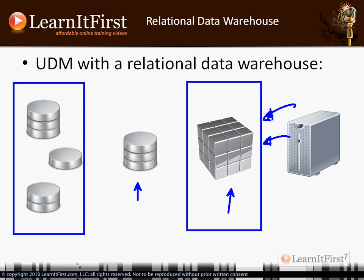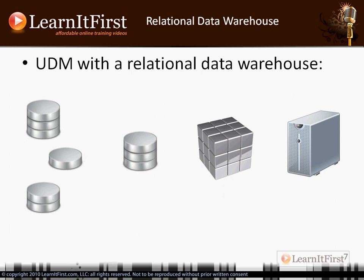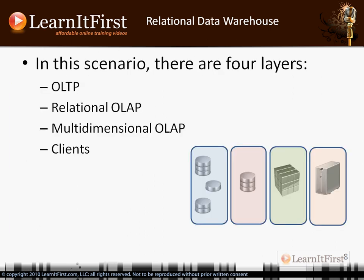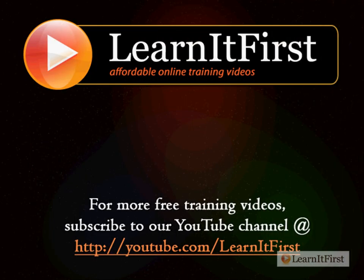The clients doing analytics come into the cube as their general interface. We now have four layers: the OLTP layer, a relational OLAP layer, a multi-dimensional OLAP layer, and then the clients.